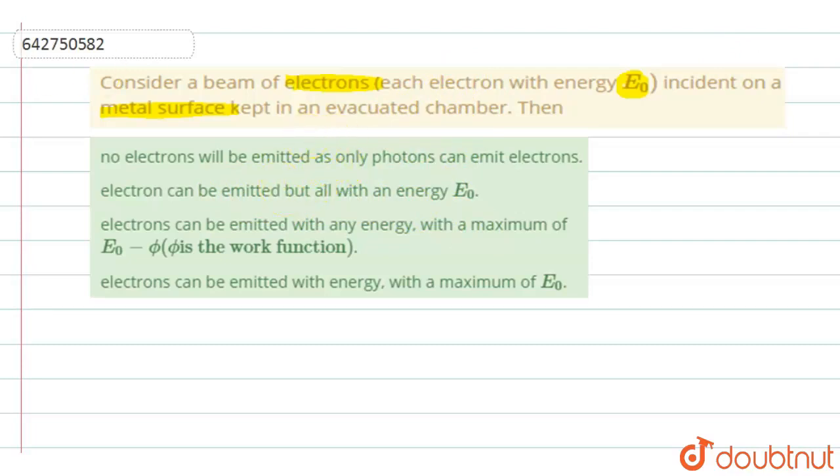electrons will be emitted with the maximum energy because you have elastic collision between the molecules. So the electrons will be emitted with the maximum energy it has. The maximum energy it has is E0.